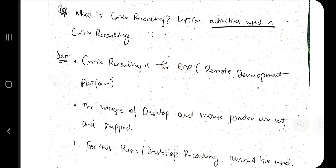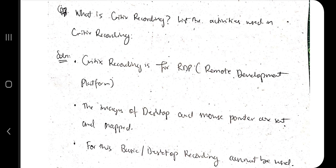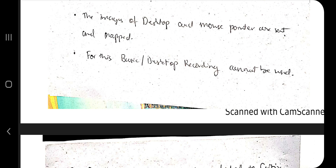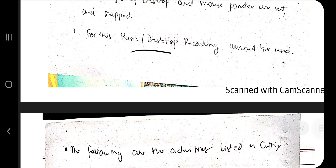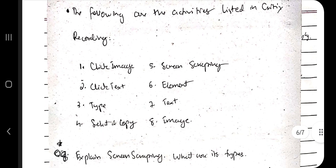Citrix Recording is used for remote development platforms — for example, if you're sitting in the USA and developing an app in China. Citrix Recording records images of the desktop one by one and uses the mouse pointer. These two things — desktop images and mouse pointer — are key. It cannot be used for basic or desktop recording. Its activities include: Click Image, Click Text, Type, Select, Copy, Screen Scraping Element, Text, Image, and Find.